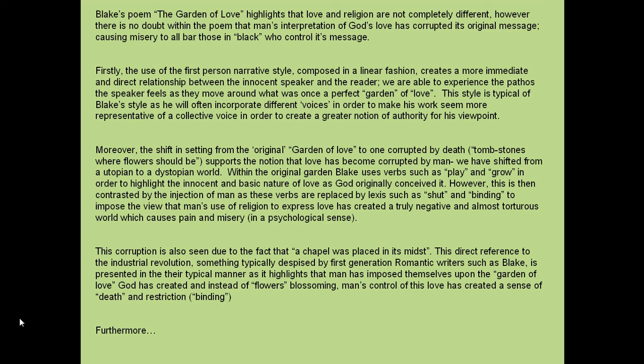Within the original garden, Blake uses verbs such as 'play' and 'grow' in order to highlight the innocence and basic nature of love as God originally conceived it. However, this is then contrasted by the injection of man, as these verbs are replaced by lexis such as 'shut' and 'binding', to impose the view that man's use of religion to express love has created a truly negative and almost torturous world which causes pain and misery in a psychological sense. This corruption is also seen due to the fact that a chapel was placed in its midst. The direct reference to the industrial revolution — something typically despised by first generation Romantic writers such as Blake — is presented in their typical manner, as it highlights that man has imposed themselves upon the garden of love God has created. Instead of flowers blossoming, man's control of this love has created a sense of death and restriction.